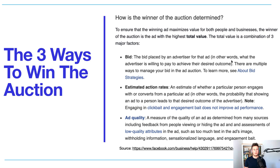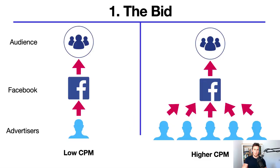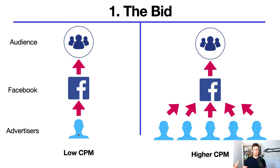I want to dive into these three individual elements with a bit more explanation so that next time you run ads or have ads underperforming you'll know exactly where to look. Element one is the bid. To illustrate how the price can affect you as an advertiser: if there's one advertiser targeting a particular audience you're going to have a low CPM — cost per 1,000 impressions — whereas if there are five times as many advertisers competing for that same audience, the CPM will be much higher.